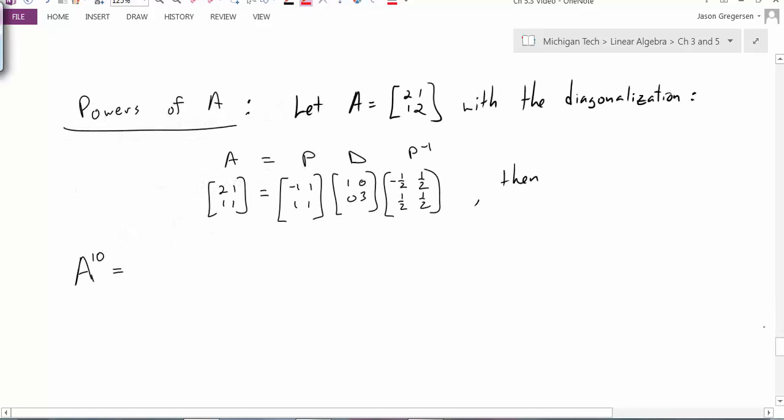Let's start by looking at powers of A. Let A be some matrix, there's our matrix, and it has the diagonalization as shown. We have our A is equal to P times D times P inverse.